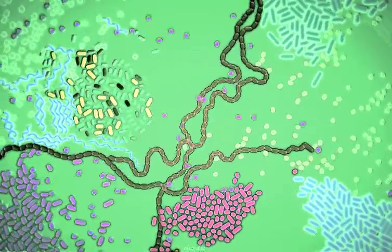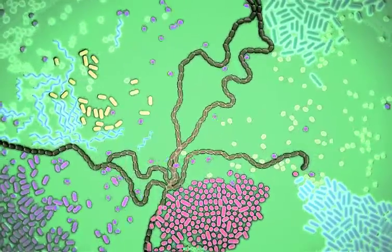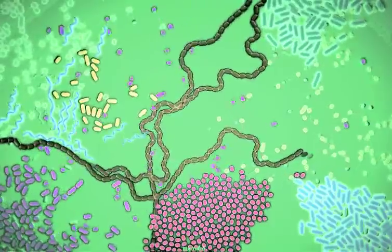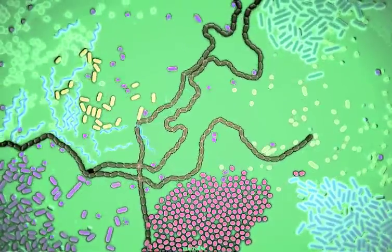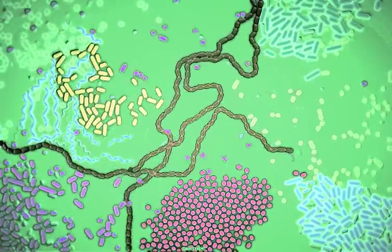Puberty starts making certain hormones, chemical signals that travel throughout the body. Along with causing visible physical changes, these hormones change the chemical balance and available resources in many body locations. These changes influence the microbes that live there.